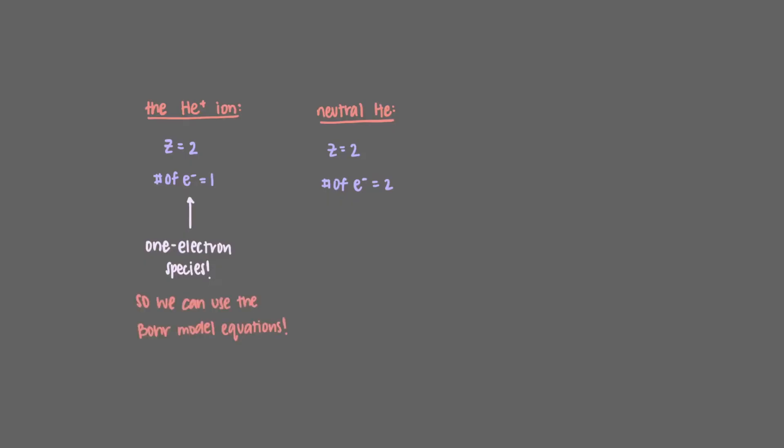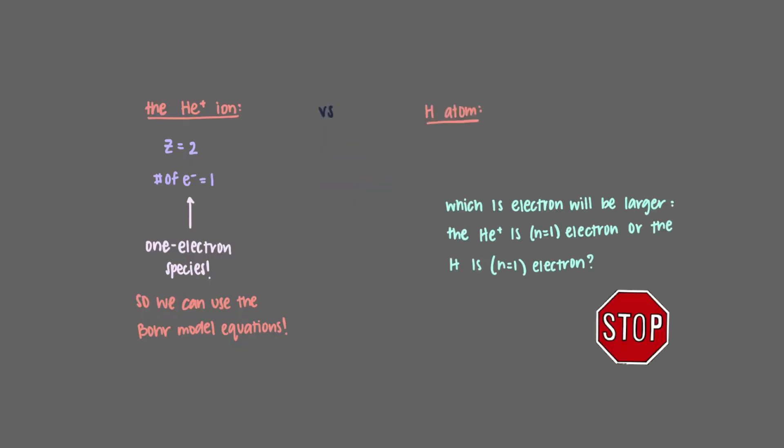So we can use our Bohr model equations to study this species. Let's compare the helium plus ion to the hydrogen atom. Which 1s electron will be larger? The helium plus 1s electron or the hydrogen 1s electron?